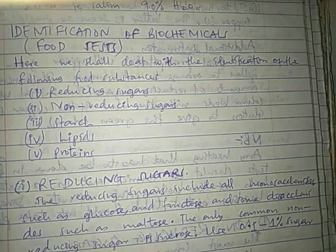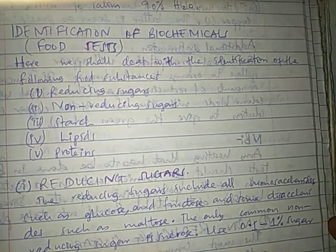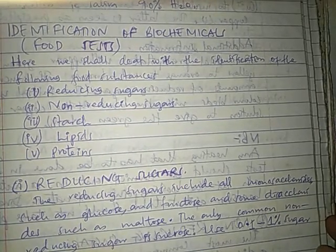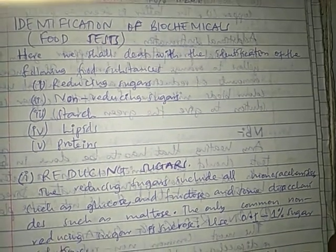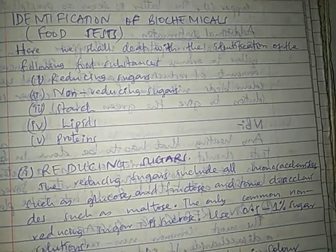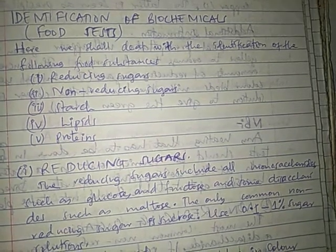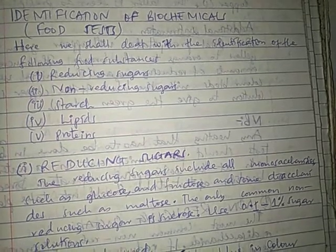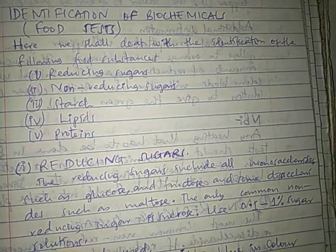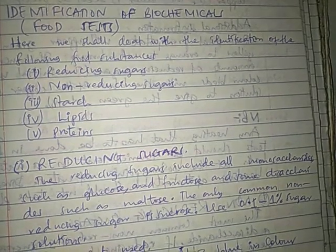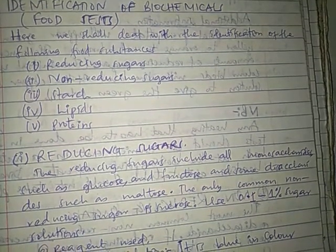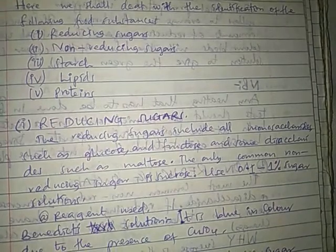Welcome back friends. In this video let's look at the identification of biochemicals, or identification of food substances, which is normally called as food tests. Here we shall deal with the identification of the following food substances: first is reducing sugar, then non-reducing sugar, starch, lipids, and the last food substance is protein.